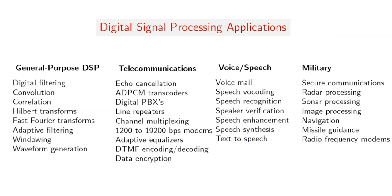There are a lot of applications of digital signal processing. For general purpose digital signal processing, we have digital filtering, convolution, correlation, Hilbert transform, and others. For applications in telecommunications, we have echo cancellation, analog-to-digital conversion, pulse code modulation, line repeaters, and other telecommunications applications.